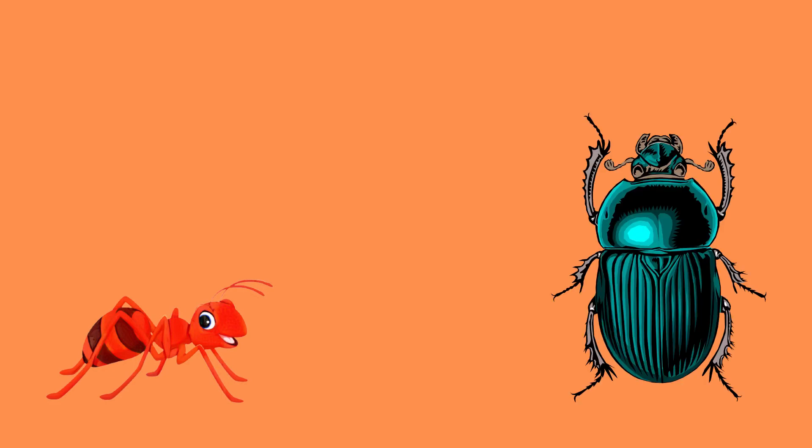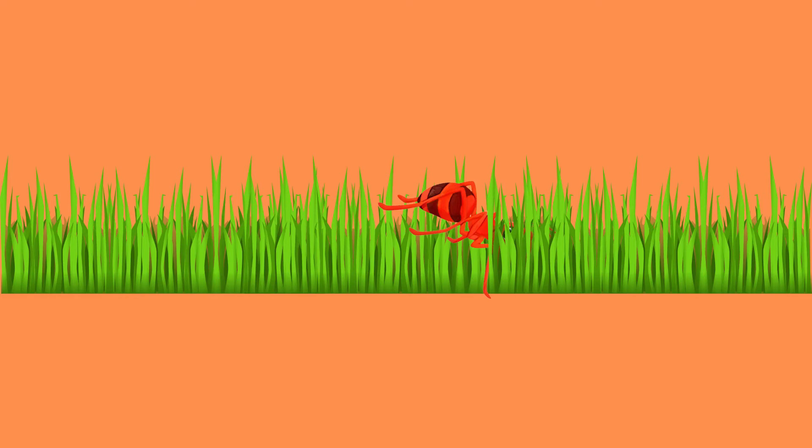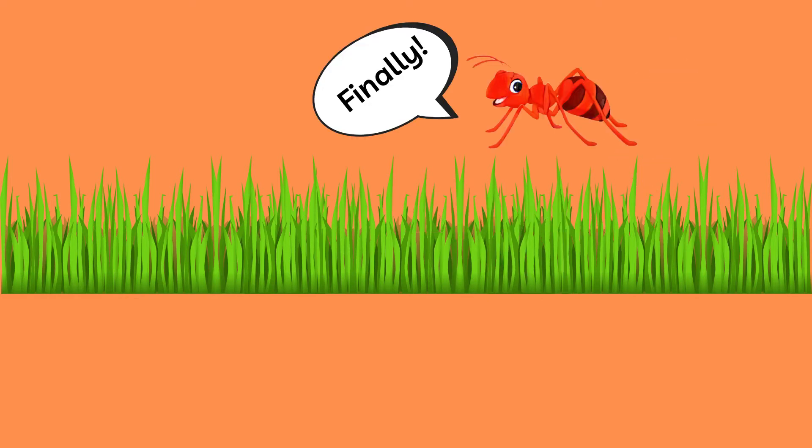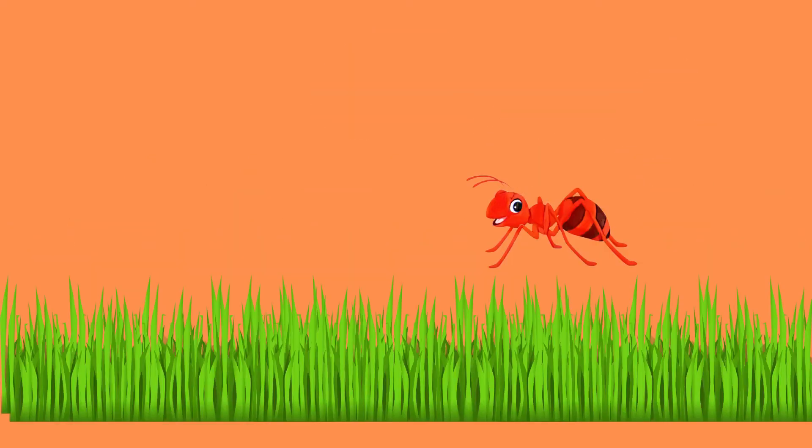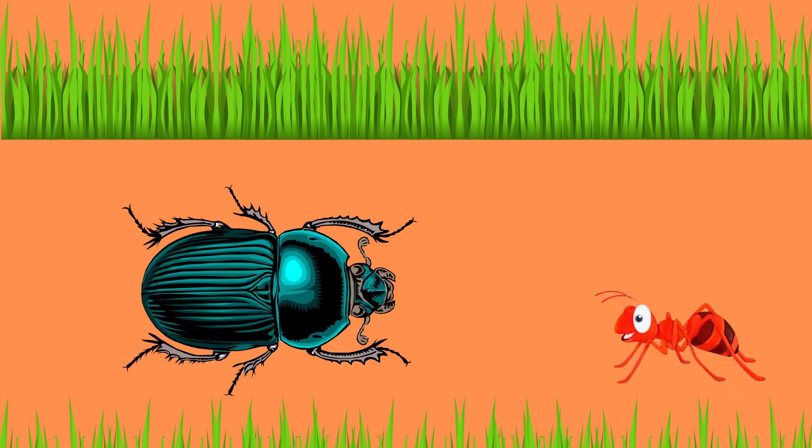To further visualize this, imagine an ant and a beetle traveling through grass. Due to their size, the ant will need to travel around in the grass, making their path longer, while the beetle can just move through the grass by pushing it to the side.